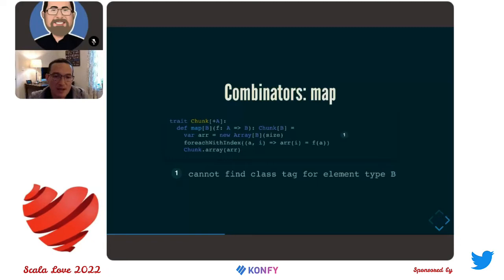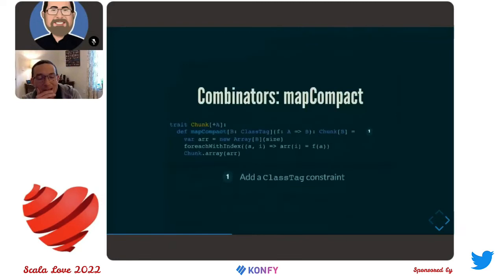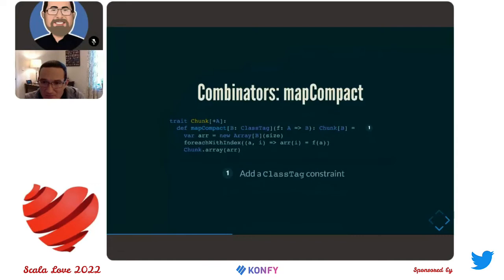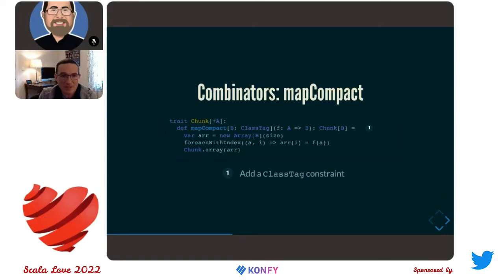The issue is that you cannot construct arrays in Scala for an arbitrary type — for an abstract type parameter B. The array constructor requires a ClassTag in implicit scope. The first answer is anytime Scala complains about a missing constraint, just add it mechanically as a parameter to the function we're working on. So we add that ClassTag constraint to type B and everything works. I changed the name from `map` to `mapCompact` though, because I don't want to pick up this ClassTag constraint as part of the signature of the operation called `map`. Mapping a chunk shouldn't require any parameter other than the function I want to map with.